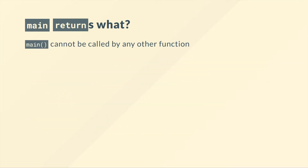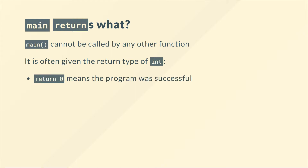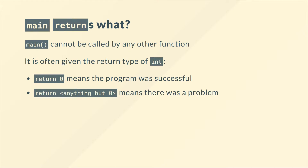Main is a special function — it cannot be called by any other function because that would create a paradox. We often give it the return type of int, and you really should, because you'll get at least a warning if you try void main. The reason is it's good practice to use return zero to mean the program was successful, and return anything else — not zero — means there was a problem.